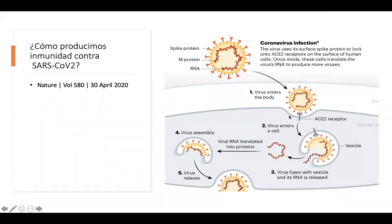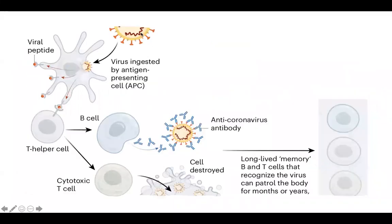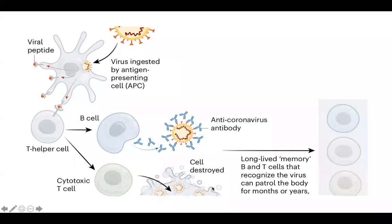Esta imagen está tomada de una referencia de Nature de abril del año pasado. El virus entra a la célula por medio de un receptor que se llama receptor de enzima convertidora de angiotensina. Dentro de la célula, el virus se denuda y su genoma en forma de RNA se traduce en proteínas y después se ensambla para liberarse al exterior de la célula y generar un nuevo ciclo de replicación. El virus o el pedazo de virus es identificado por una célula presentadora de antígenos, en este caso una célula de Langerhans, que identifica un epítope o una parte del virus que presenta a otras células.